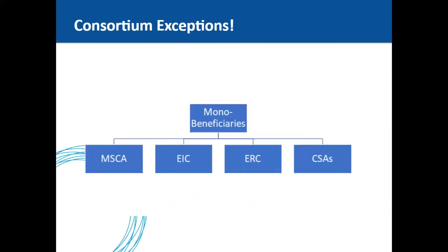There are some exceptions where you can be a mono-beneficiary. These exceptions are the MSCA, EIC, ERC, and CSAs. The MSCA provides grants for all stages of research careers — from doctoral candidates to highly experienced researchers — and encourages transnational, intersectoral, and interdisciplinary mobility.